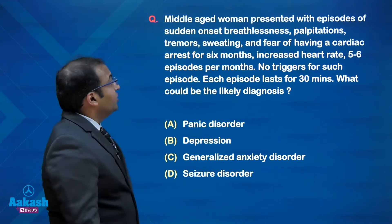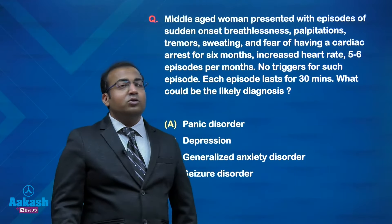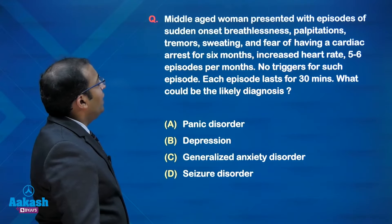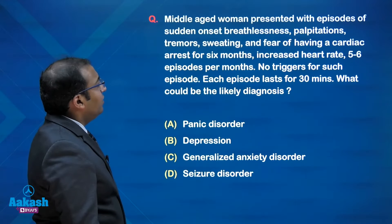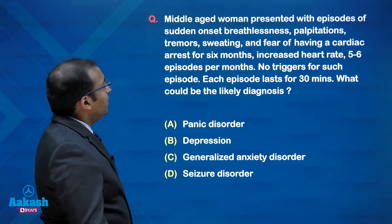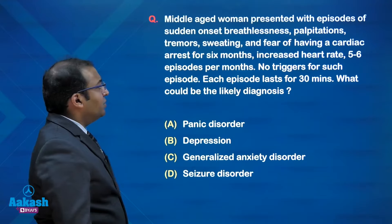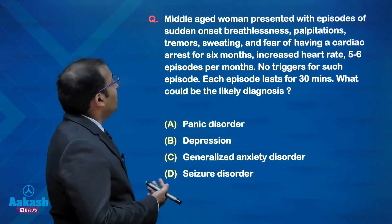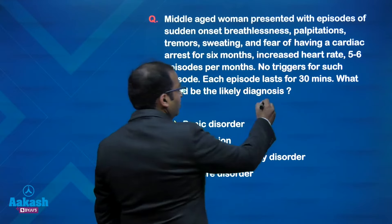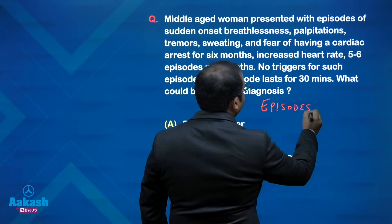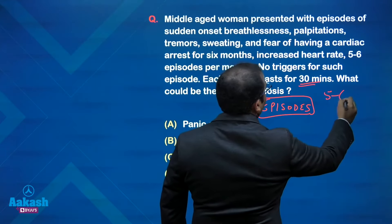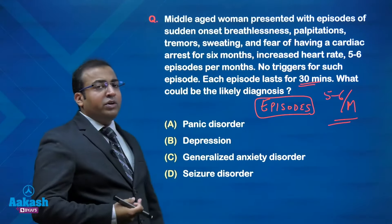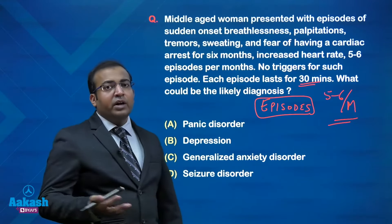Moving to the next question about an anxiety disorder patient: a middle-aged woman presented with episodes of sudden-onset breathlessness, palpitations, tremors, sweating, and fear of having a cardiac arrest, lasting about 30 minutes each, with five to six similar episodes per month, increased heart rate, and no identifiable triggers. An episodic illness must be identified among the options.